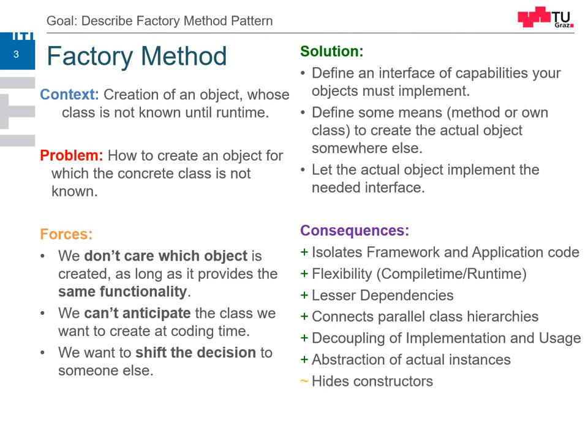The problem is that the constructor is hidden. So if the constructor of the object changes, our factory method should also change. Another problem is that maybe not every capability of the constructor is provided by the factory method. Then we need an additional interface abstraction layer.